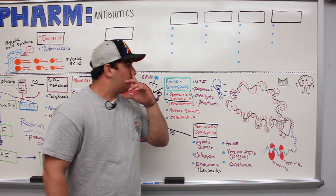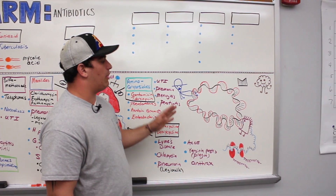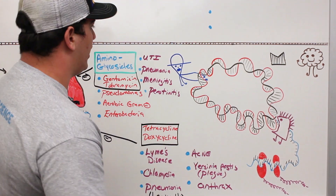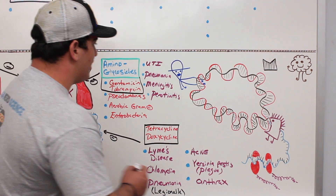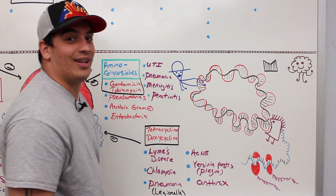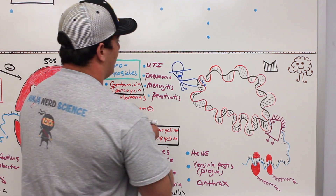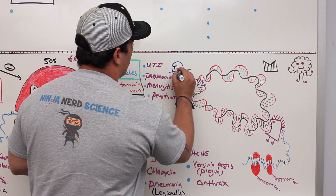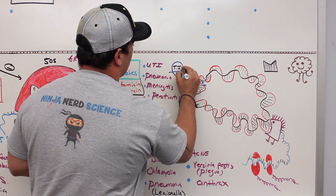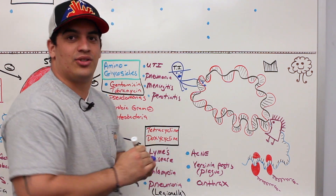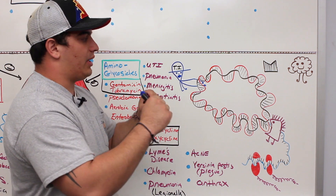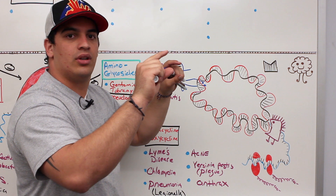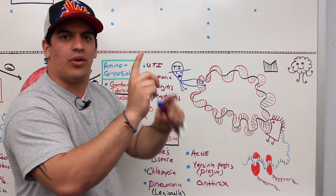Let's take a look at some of the antibiotics that are targeting the actual DNA. This cool little enzyme is actually called topoisomerase. Whenever your DNA is replicating, downstream from that you can sometimes get what's called super coils, where the DNA is getting really, really coiled up.